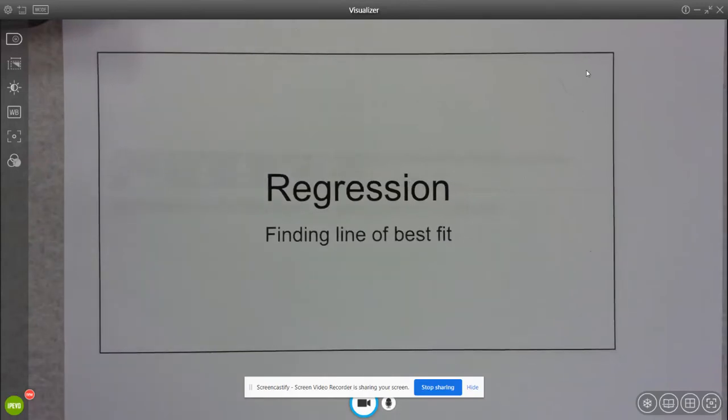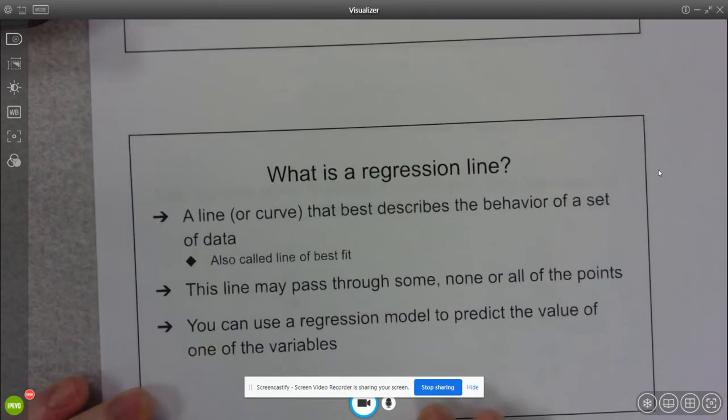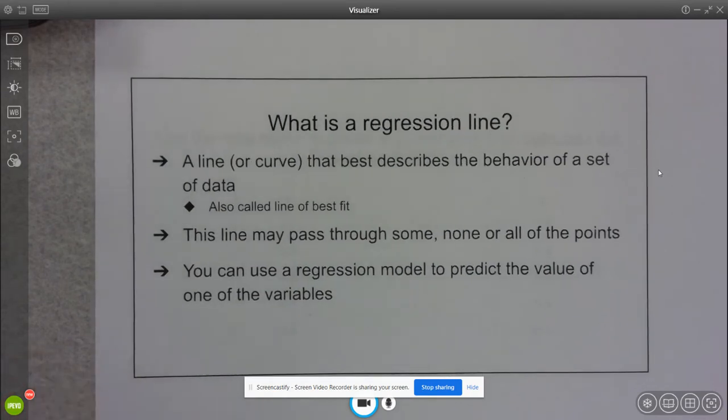This lesson is going to talk about regression and the correlation coefficient. So the first thing we need to talk about is what we actually mean when we say regression. Regression is the line or curve that's going to explain our scatter plot the best.